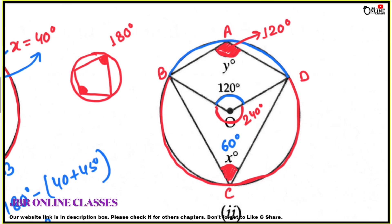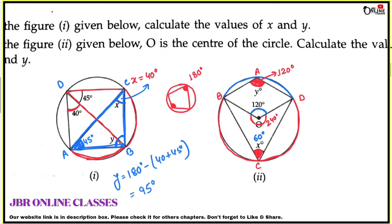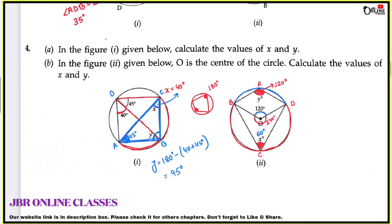ABCD is a cyclic quadrilateral. The sum of opposite angles equals 180 degrees. Since X equals 60 degrees, the opposite angle A equals 180 minus 60, which is 120 degrees. Sum number 4 is complete.